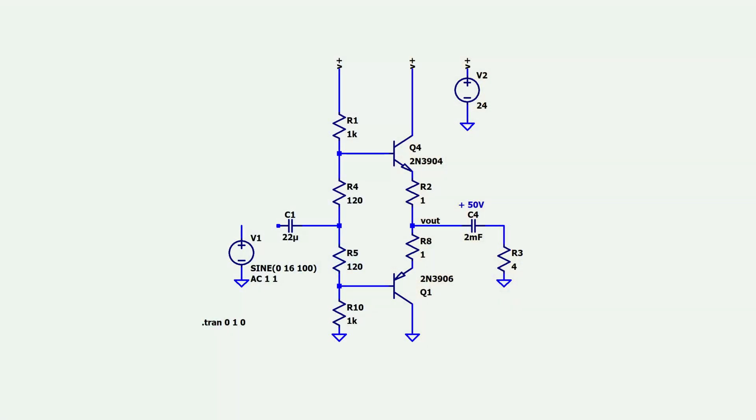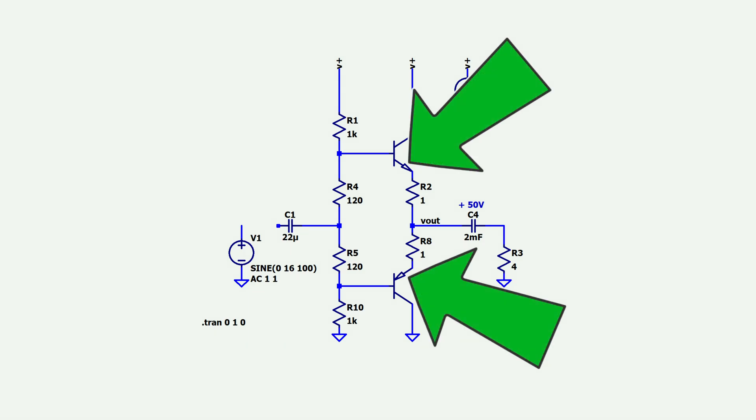That means the bias current of our amplifier will change slightly as temperature changes. Of course, as an amplifier is used it heats up, so this is a real effect we need to consider. No matter what approach is used, the idea is to exactly match the voltage applied across the transistor pair with two times the base-emitter junction voltage for a specific collector current at all temperatures.